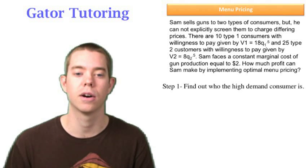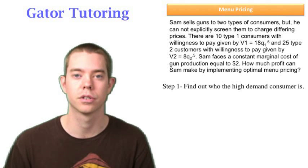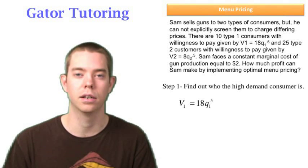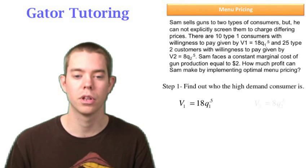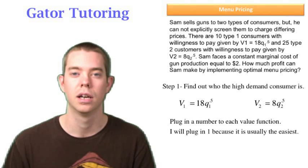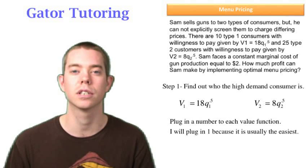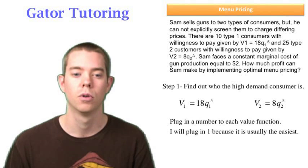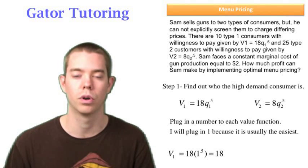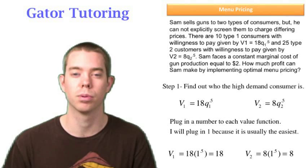Step one in this case is to find out who the high demand consumer is. Who likes the product more? This first guy likes it: every unit he consumes gives him 18 to the 0.5. The next guy likes it 8 to the 0.5 for every one unit he consumes. I like to pick the number 1 because it just makes it easiest, but what you want to do is just plug in a number to the value functions and figure out who gets the most value out of the product. The first guy gets 18 worth of value if we plug in just one unit. The second guy gets 8 worth of value if we plug in just one unit.